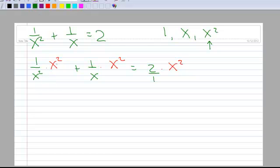And so now we're going to simply do this multiplication. So x squared times 1 divided by x squared is 1. And then x squared times 1, of course, is x squared, divided by x. Well, that just leaves me with x. And then 2 times x squared divided by 1, of course, is 2x squared.